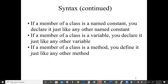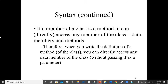We can also use the keyword private or public on methods. If a member of a class is a method, it can directly access any member of the class. Therefore, when you write the definition of a method of the class, you can directly access any data member of the class without passing it as a parameter.